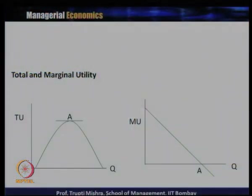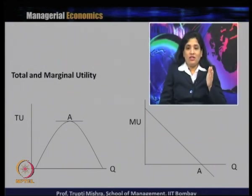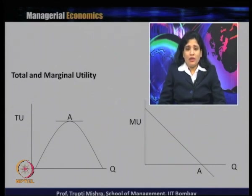Total utility is the sum total of utility the consumer gets after consuming all units of goods and services. Marginal utility is the additional utility added to total utility when the consumer consumes one more unit. Graphically, total utility takes an inverted U shape — initially increases, reaches a maximum, then decreases. Marginal utility is generally the slope of the total utility curve, starting higher and slowly decreasing.